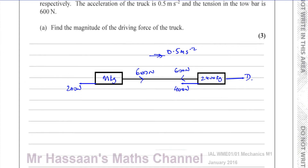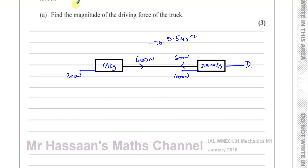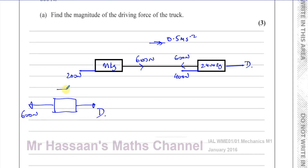So now we've got to find the magnitude of the driving force. What I can do here is I can take the situation as a whole or I can take each part separately. In this particular case, I can't take the situation as a whole — I can't treat this as one big mass — because the problem is I don't have the total mass. I have the mass of the truck but not the mass of the trailer, so I have two unknowns: the mass of the trailer and the driving force.